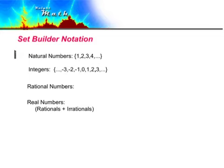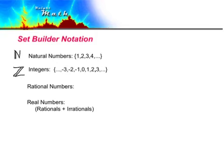We can identify it with a bold N with a little extra line. The integers include the natural numbers, zero, and the opposites of the natural numbers. We call this set ℤ. Then we have the rational numbers.